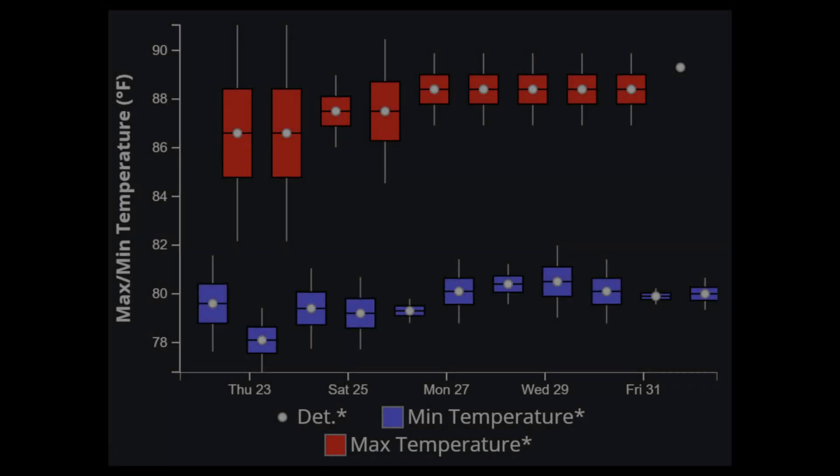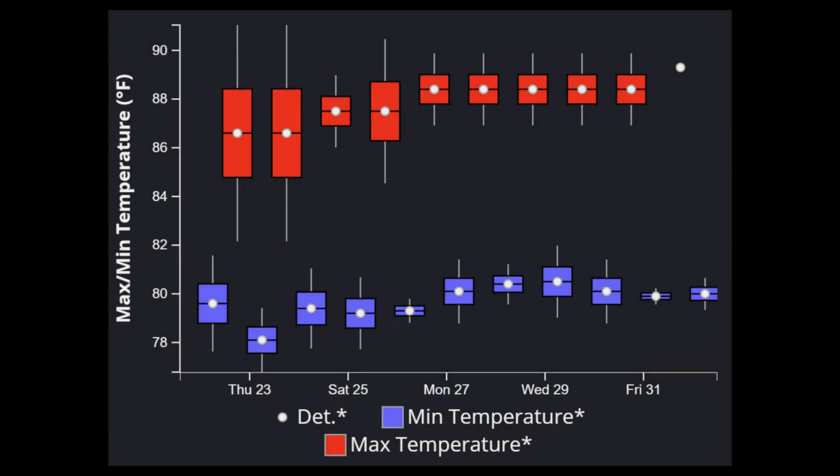If the median and deterministic values fall close to or on top of each other, view that as a sign of confidence that the NBM has a good handle on the forecast and there isn't anything in the data causing a significant difference.